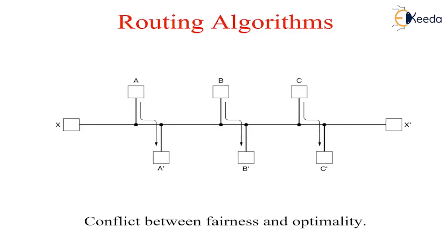In contrast, adaptive algorithms change their routing decisions to reflect changes in the topology, traffic, as well as other parameters.